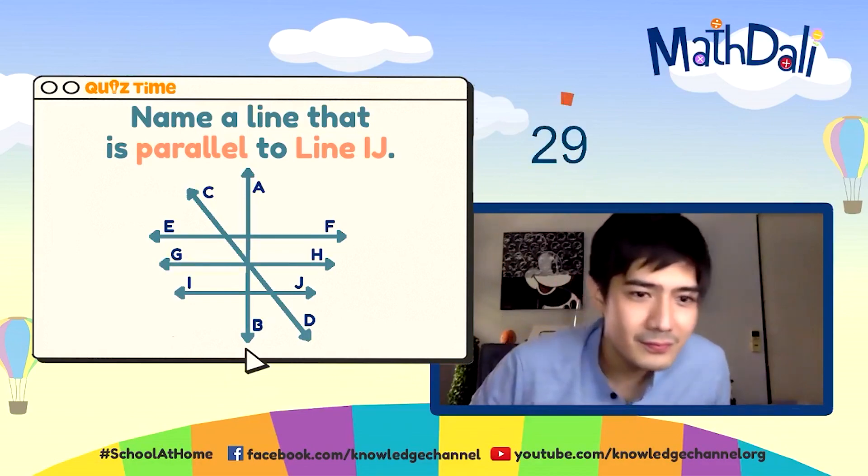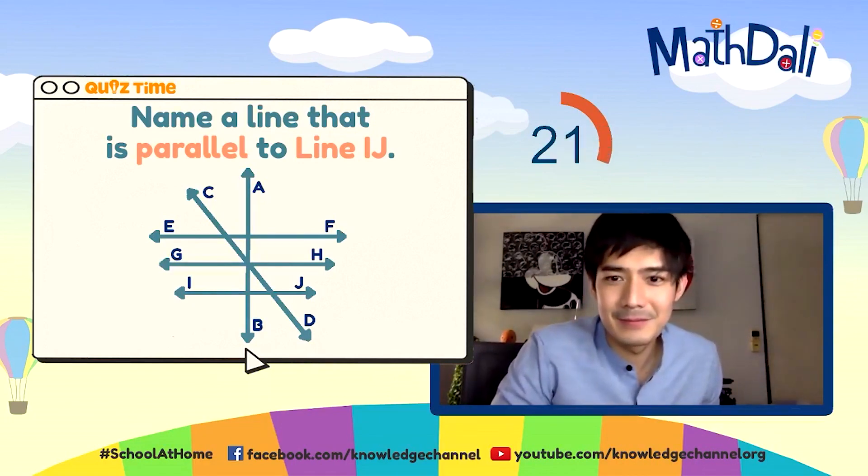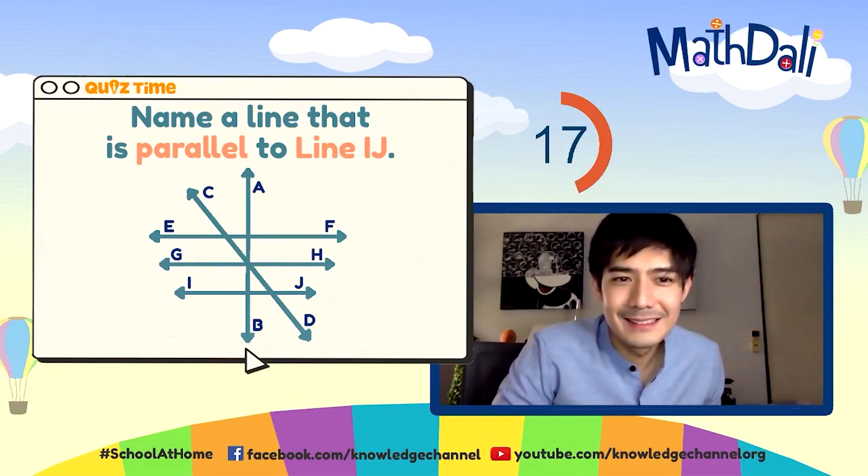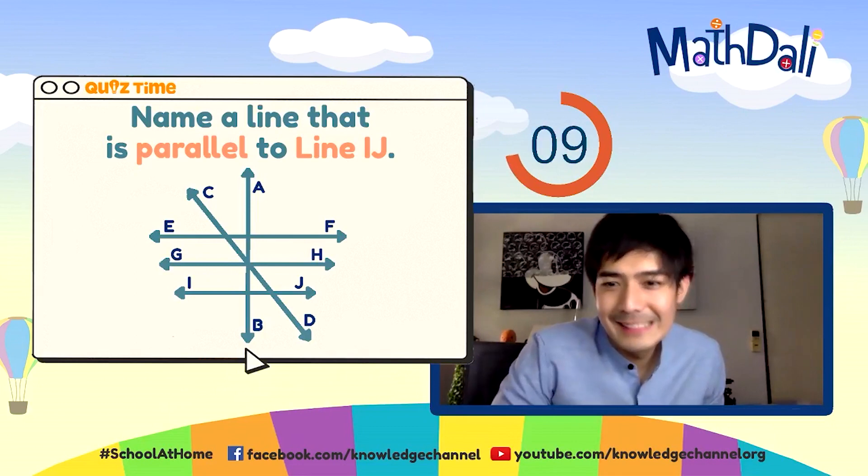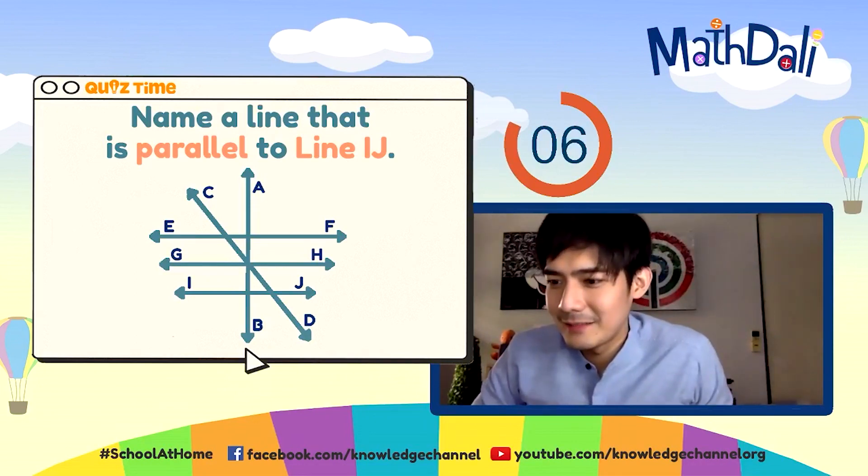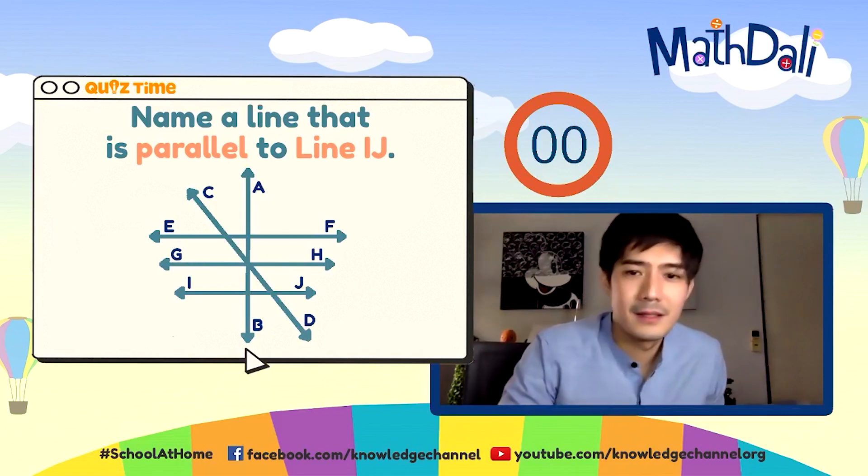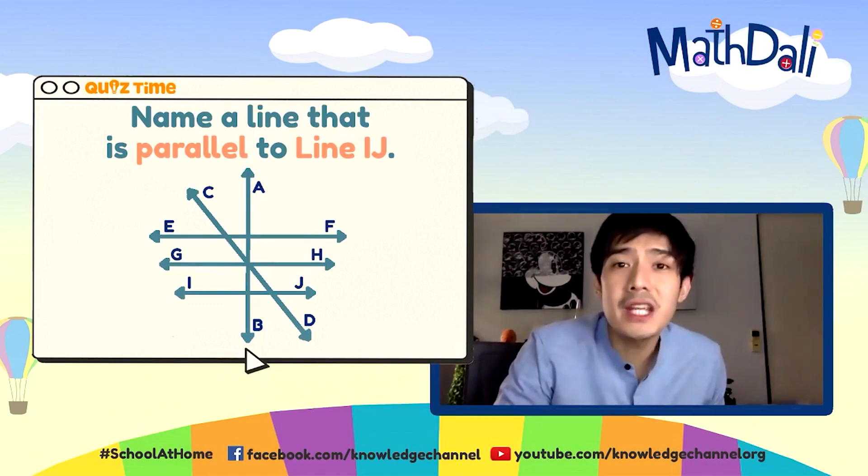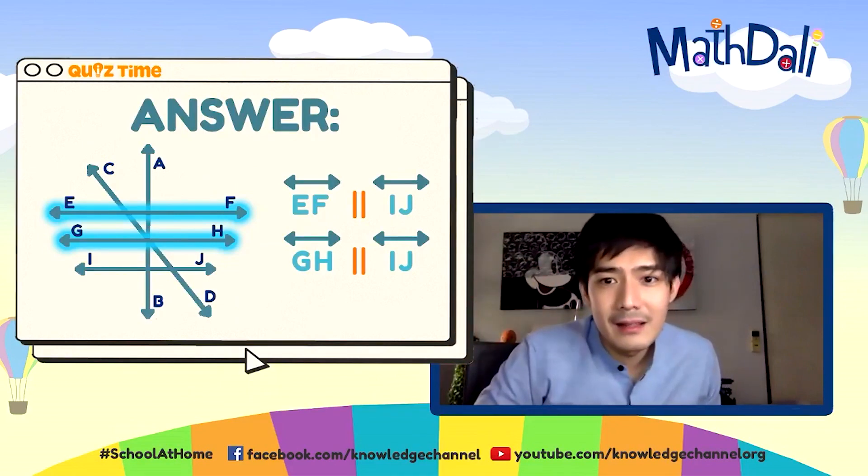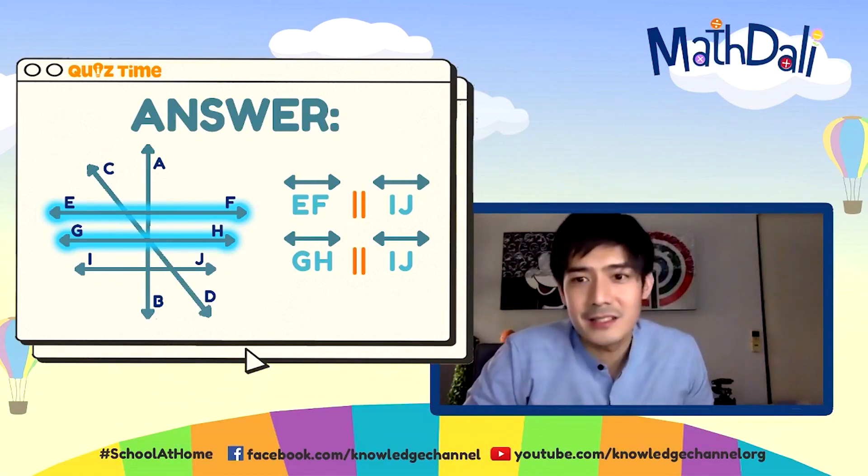Go! 30 seconds. Ano nga ba? Ang daming lines, nakakalito. Paano ito? Money, guys. 3, 2, 1, done! Name a line that is parallel to line IJ. Ano kaya ang tamang sagot? Kung sumagot kayo ng EF or GH, again, pwedeng mabaliktad ito. Yun ang tamang sagot. Either line EF or line GH. Napakagaling yan.